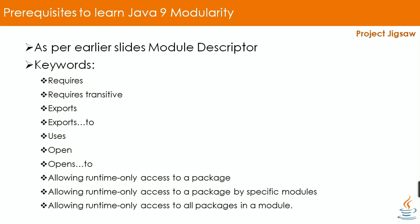The next keyword is requires transitive. To specify a dependency on another module and to ensure that other modules reading your module can also read that dependency — this is also known as implied readability. Module A can read module B and module B can read module A. In this case, we use requires transitive, like: requires transitive module-M.